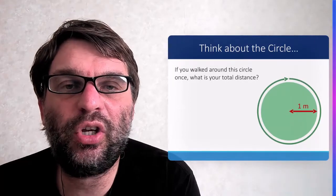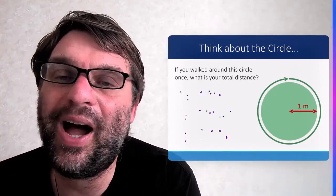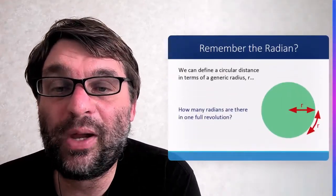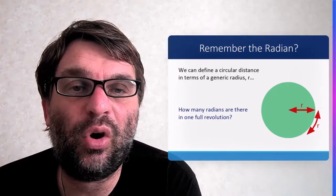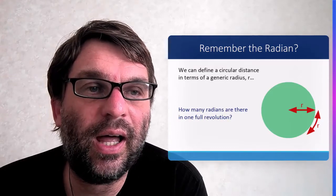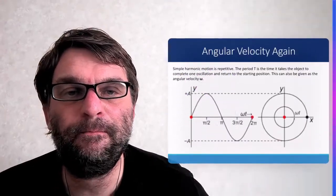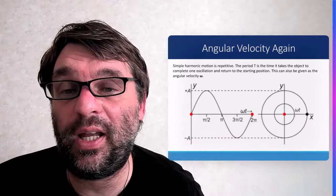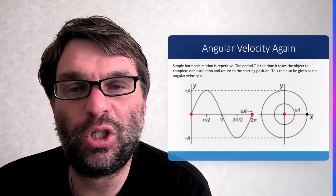Thinking about a circle: if you walk around the circle once, the total distance is 2πr, roughly 6.28 meters. Going back to circular motion, we can define a circular distance in terms of a generic radius r by how many radians are in one full revolution — 2π radians. This means we can introduce the concept of angular velocity to SHM, because it's repetitive, just like circular motion.